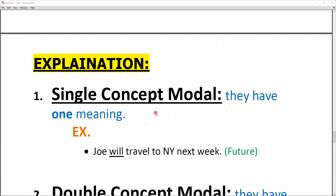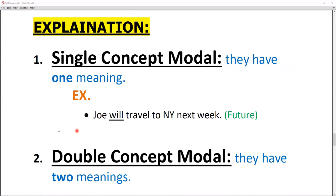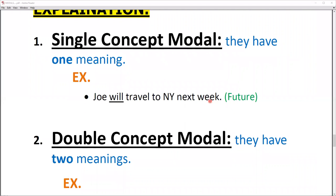Explanation of the concept. For a Single Concept Model, they have one meaning. They only have a meaning. For example: Joy will travel to New York next week. It is indicated as a future tense. Here, model indicating future tense. We are learning a sentence that it is using a single concept which is indicating the future tense.